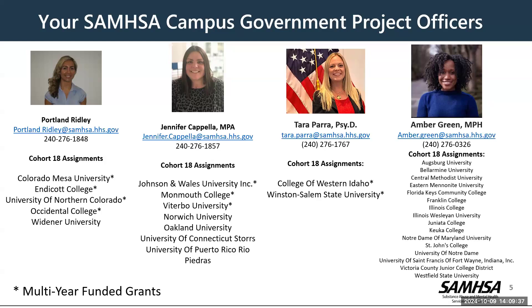We also wanted to highlight that some grantees in this cohort are funded annually and some are multi-year funded. Those grantees who have an asterisk next to their name, as listed on this slide, are multi-funded grantees. Their funding for all three budget periods was issued at the beginning of their grant. All other grantees have received only their initial budget period's funding, with subsequent years' funding to be released before the future years begin. We will discuss this in more detail later in the webinar.